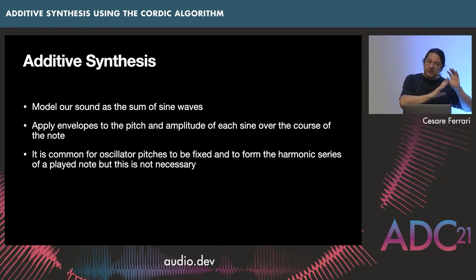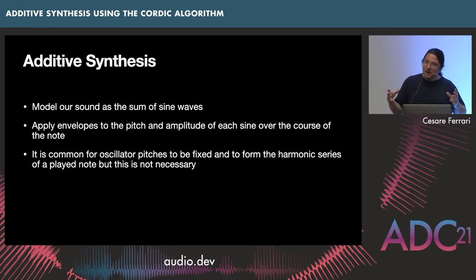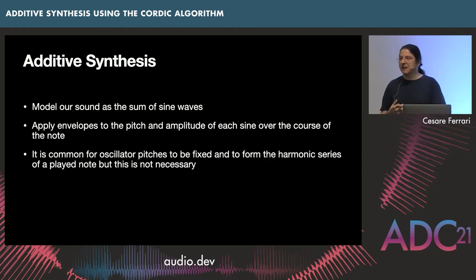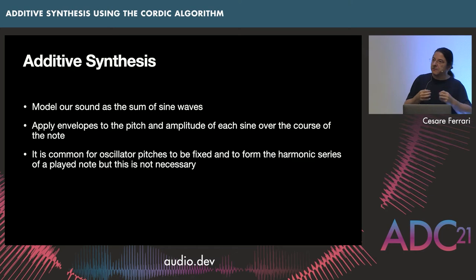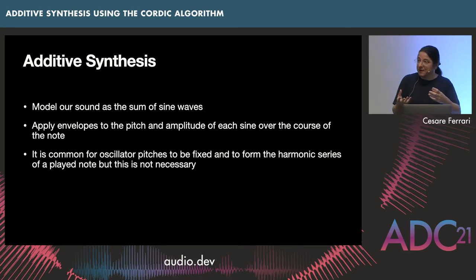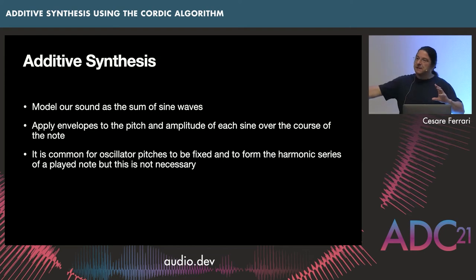That harmonic series model is actually quite powerful, though it doesn't cover everything. It certainly doesn't cover a lot of the colorations that make sound particularly pleasing. For example, the initial attack on a piano note is not harmonic — if you break it down into sine waves there's no strong harmonic relationship there. But if we put that aside and think about the steady state of the note, this pattern emerges.